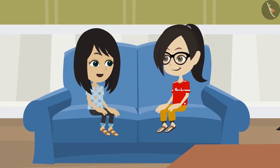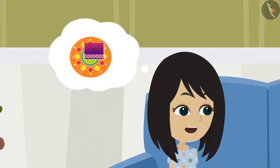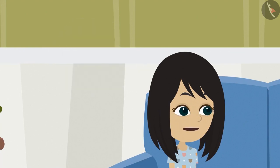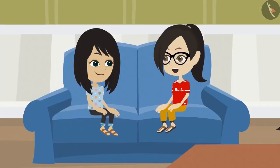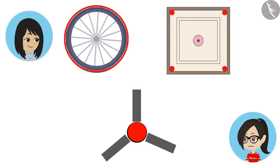A circle can be used to enhance the beauty of an object, or it may be a necessity for an object. Like in Rangoli, Mummy's saree, and the design on the gate, the circle is there to enhance their beauty. Whereas for the wheels of a bicycle, the center part of a fan, and the holes in the carom board, the circular shape is an essential part.